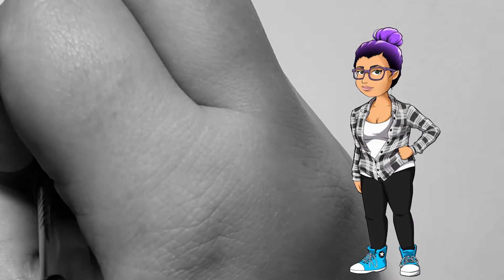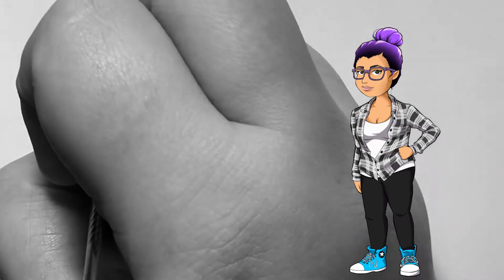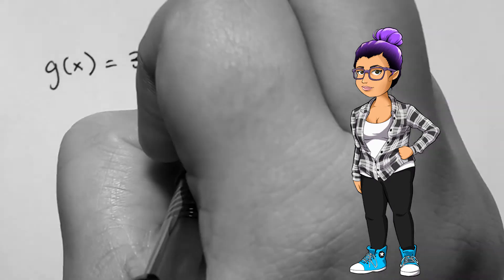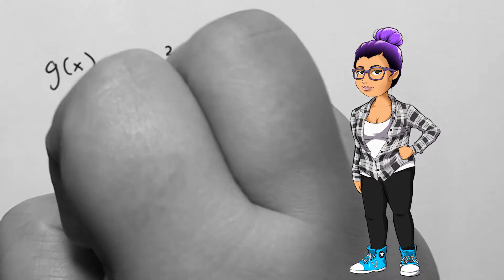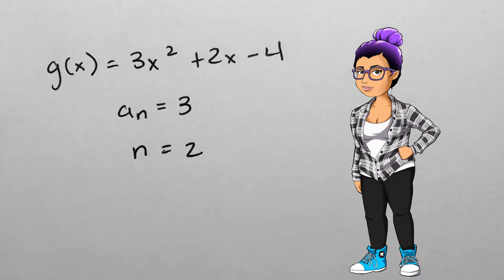If g of x is 3x squared plus 2x minus 4, we are looking at a polynomial function that happens to also be quadratic. The leading coefficient is 3 and the degree is 2.